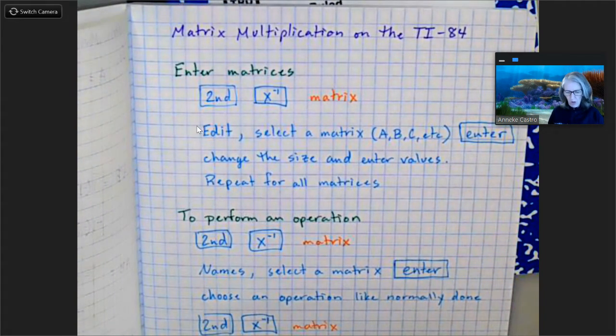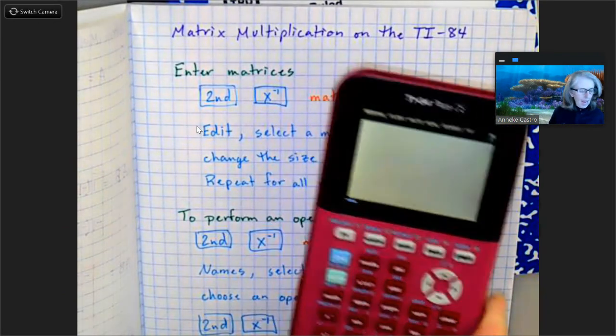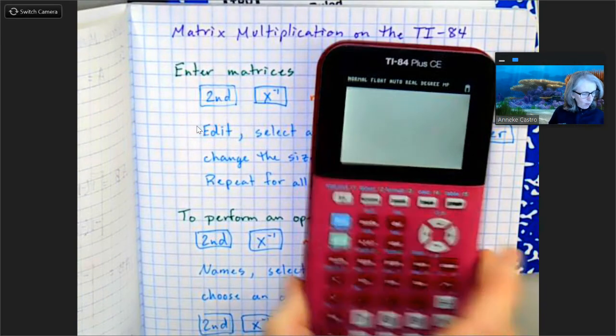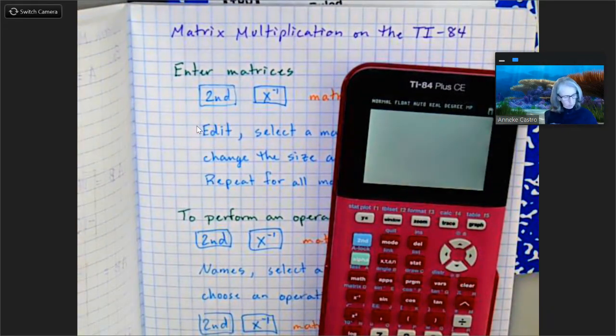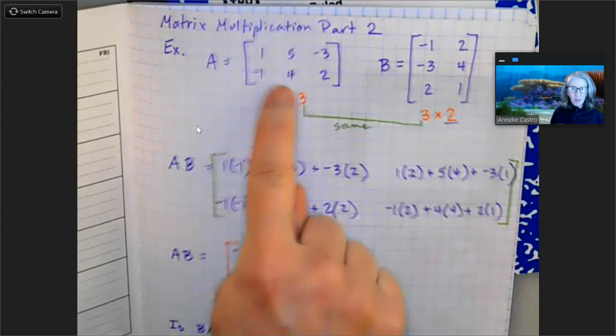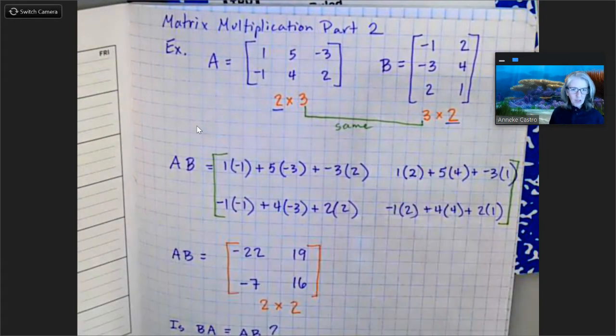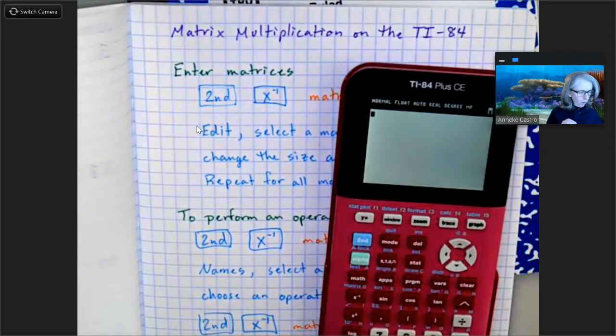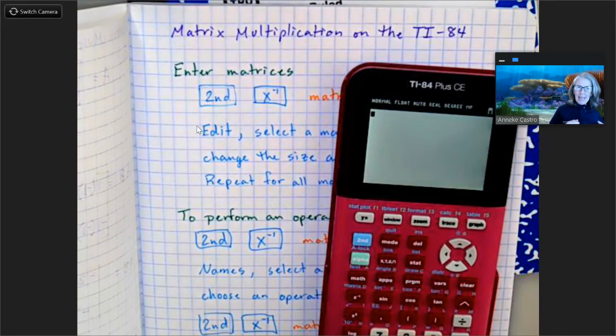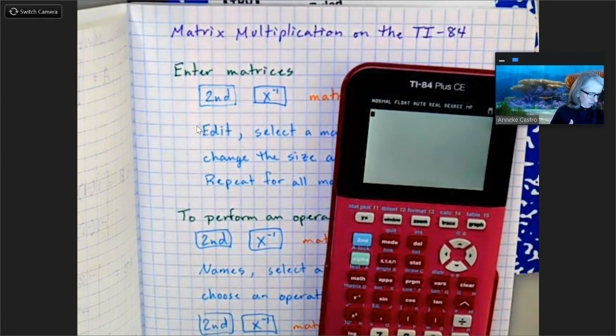So first of all, here is my TI-84 and we're going to enter our matrices. For this example, I'm going to use the problem right here. I'm going to do this problem because we know what the answer should be. It should be this, so I'm going to show you how to do it on our calculator.